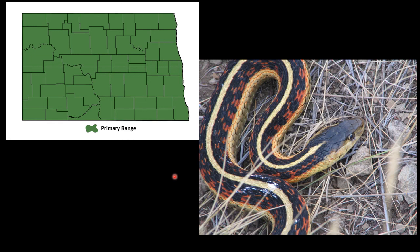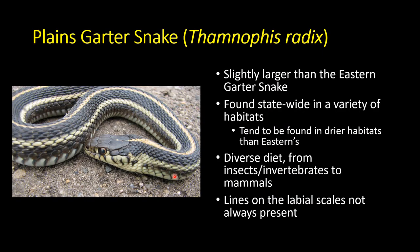Let's move to the next garter snake — the plains garter snake, Thamnophis radix. In general, these tend to be larger than the eastern, though the size range overlaps quite a bit and we can find large individuals of both species. They are found statewide but tend to be in drier habitats than the eastern garter snake.